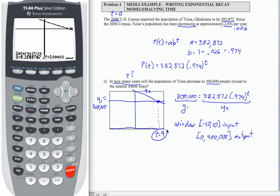So my result is t equals 9. So we're going to end this with a complete sentence that's to say in 9 years Tulsa will have 300,000 people.